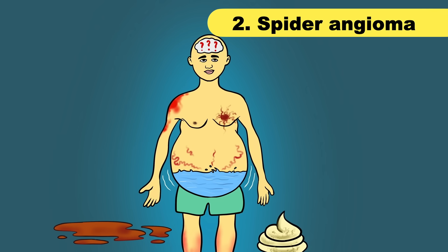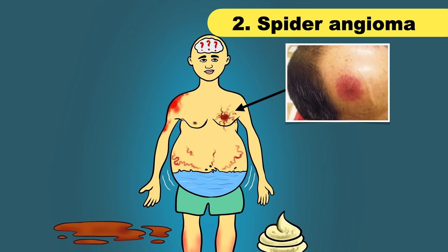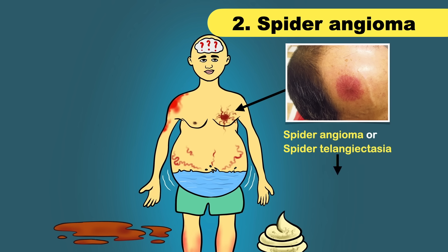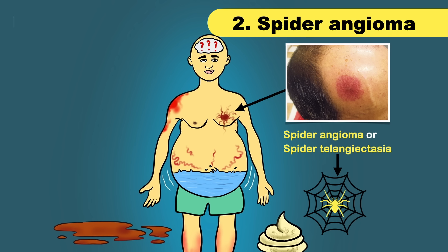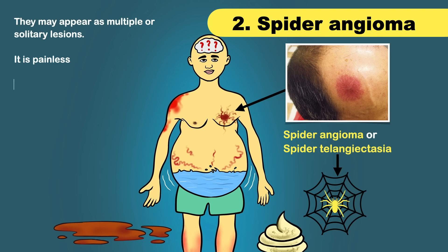The next important skin manifestation is spider angioma. You may see web-like clusters of blood vessels under your skin, which is called spider angioma or spider telangiectasia. The lesion contains a central red spot and reddish extensions which radiate outward like a spider's web. They may appear as multiple or solitary lesions and are painless.